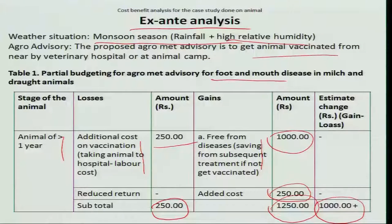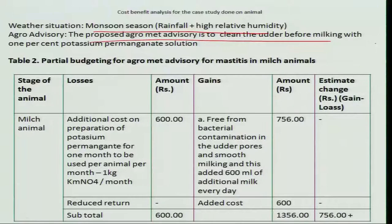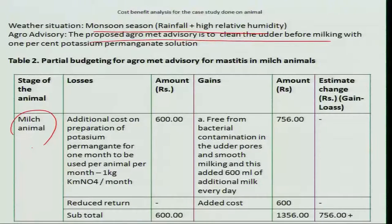This has really been happening at the field level, especially in Tamil Nadu, India. In the last year, this economic benefit was obtained by many farmers. Now, coming to another situation — this is for the monsoon season again. Rainfall and humidity are present; the proposed agro advisory is to clean the udder with potassium permanganate solution before and after milking, to protect against mastitis disease or bacterial contamination.